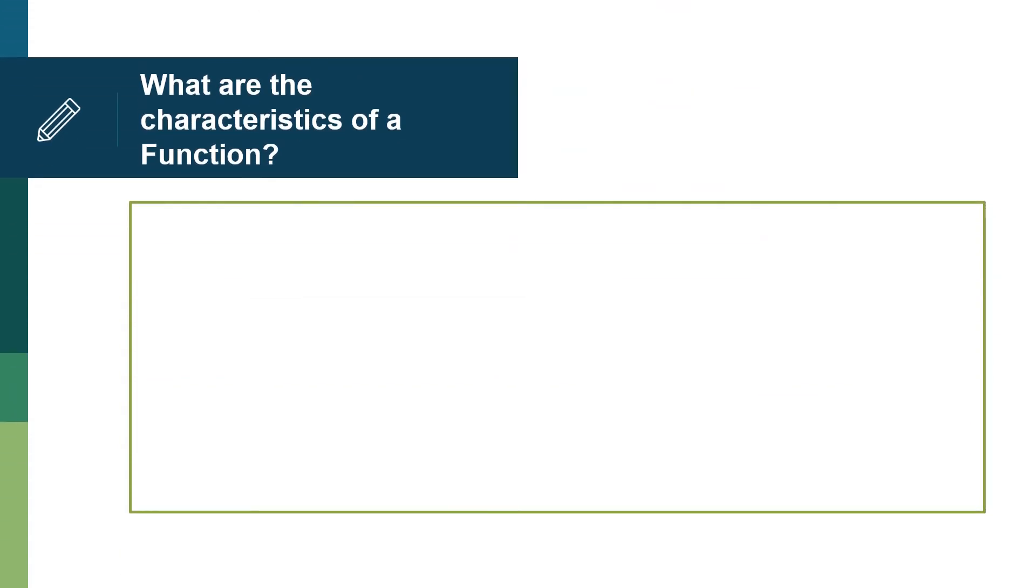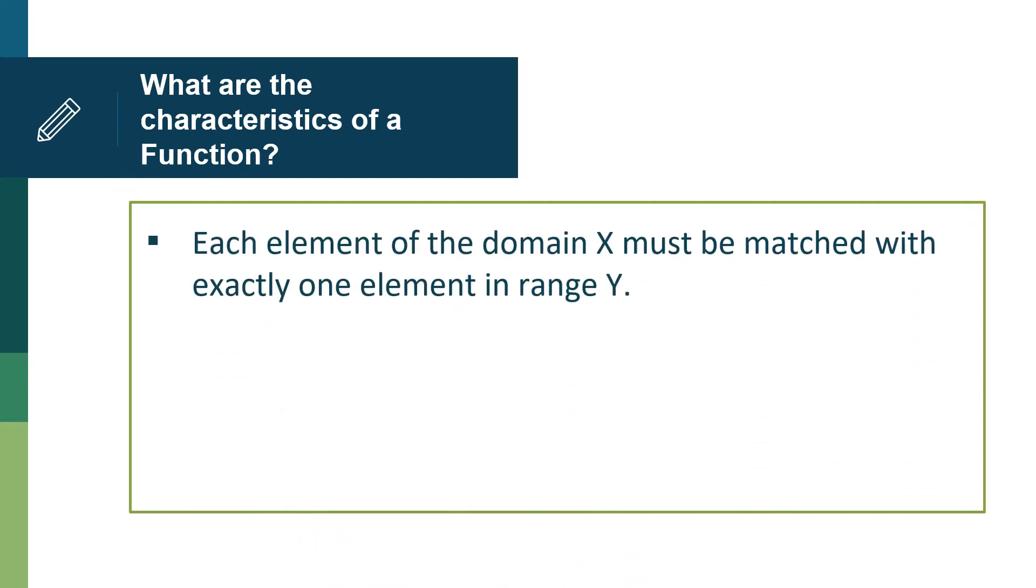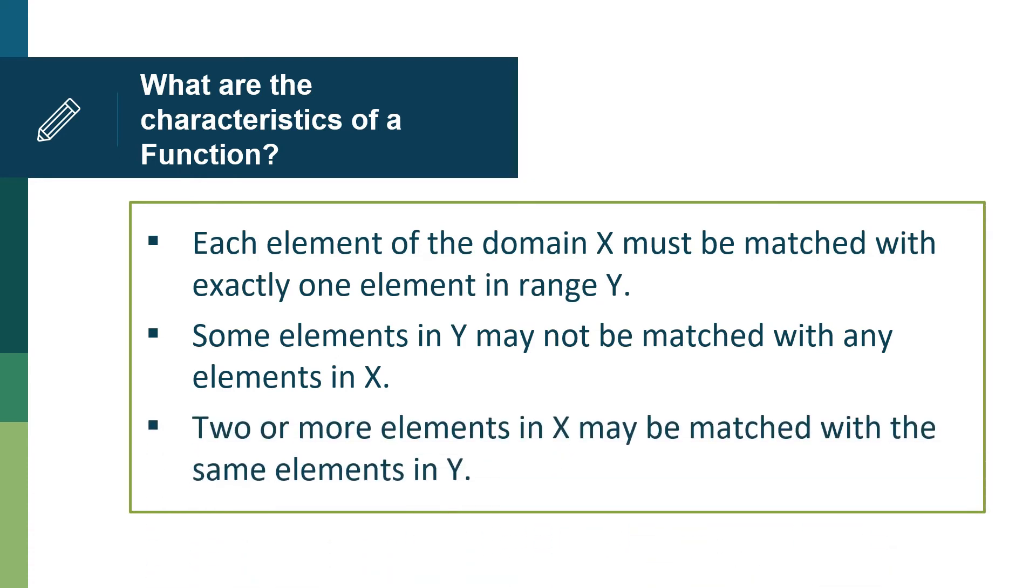So in order for us to identify whether the given relation is a function or not, it is important also for us to familiarize the different characteristics of a function. So these are the different characteristics of functions. First, each element of the domain X must be matched with exactly one element in range Y. Second, some elements in Y may not be matched with any elements in X. And third, two or more elements in X may be matched with the same elements in Y.